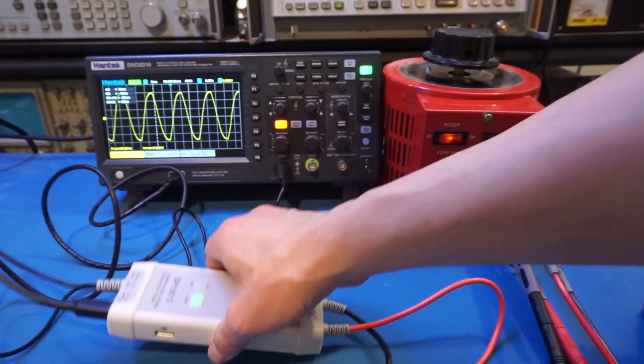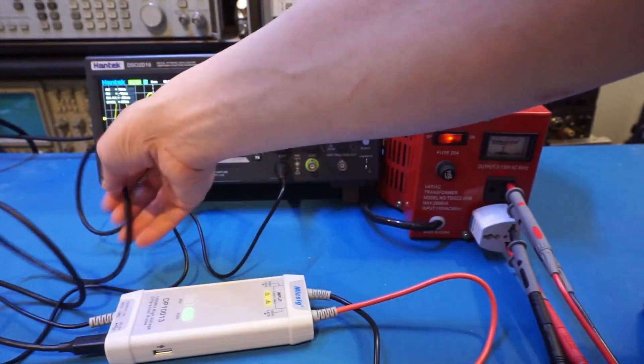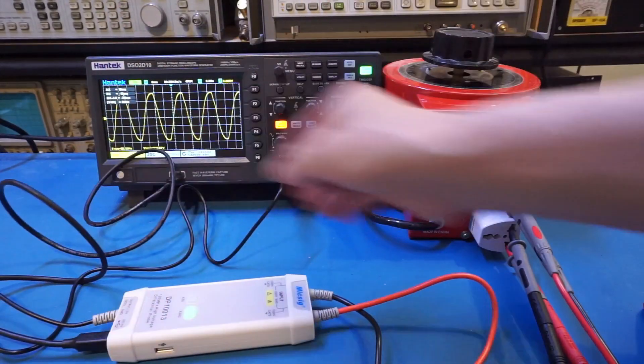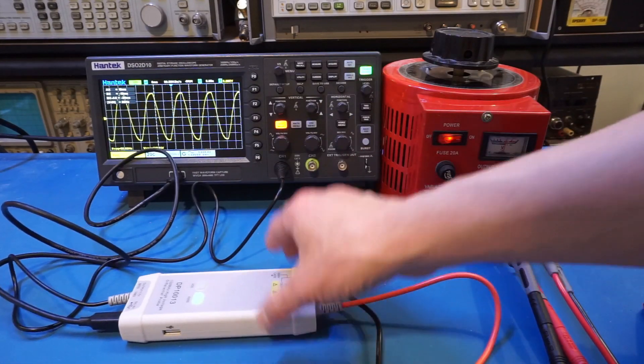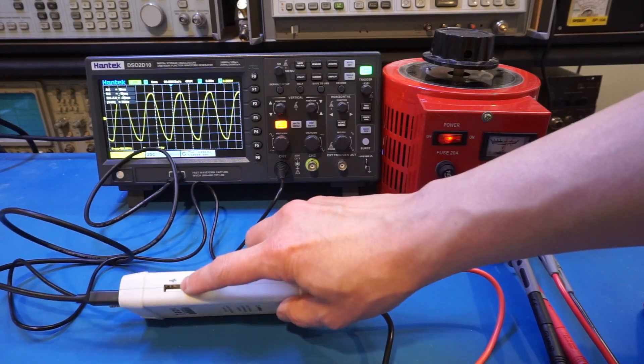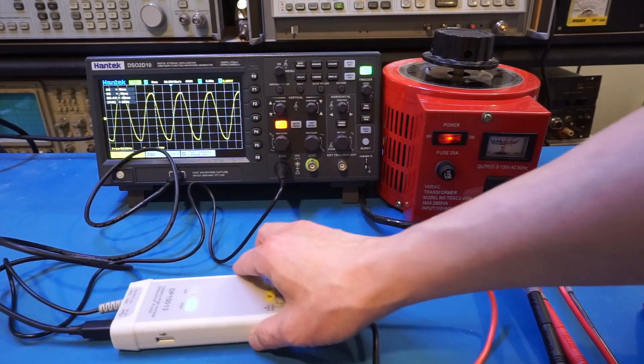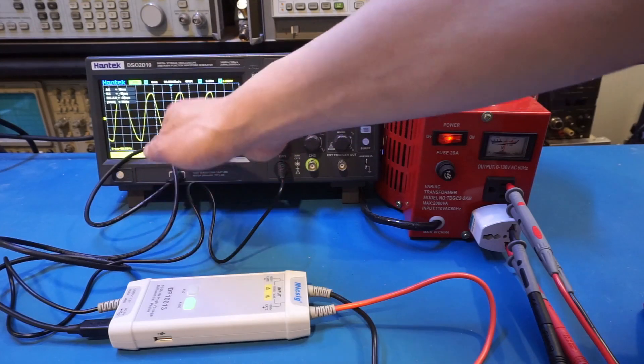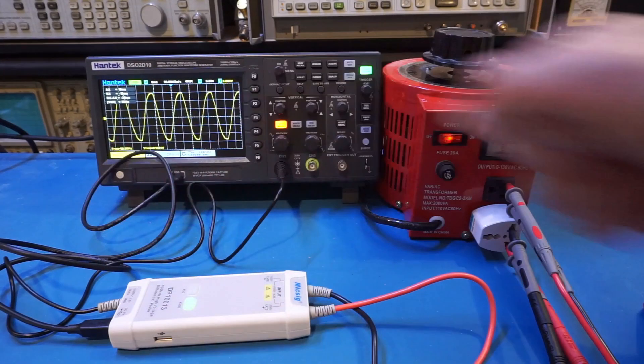As you can see here, the probe is powered from the USB output from the oscilloscope, and of course it can be powered by any independent USB power source as well. And we do have a feed-through USB output here, so you don't have to occupy the port if you're using that for power.